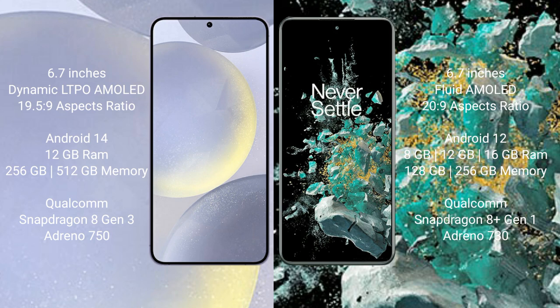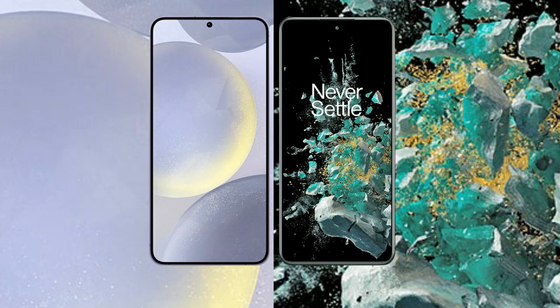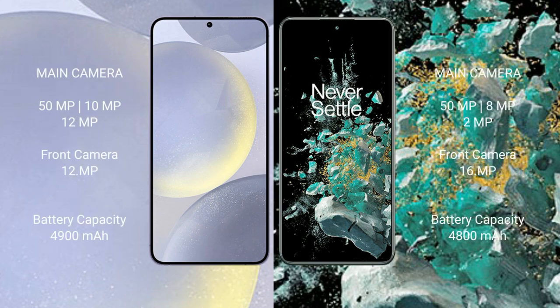The Samsung Galaxy S24 Plus runs on the Android 14 operating system, while the OnePlus 10T runs on Android 12. The S24 Plus comes with 12GB RAM and 256GB or 512GB internal storage, powered by the Qualcomm Snapdragon 8 Gen 3 processor and Adreno 750 GPU. The OnePlus 10T comes with 8GB, 12GB, or 16GB RAM and 128GB or 256GB internal storage, with the Qualcomm Snapdragon 8 Gen 1 processor and Adreno 730 GPU.